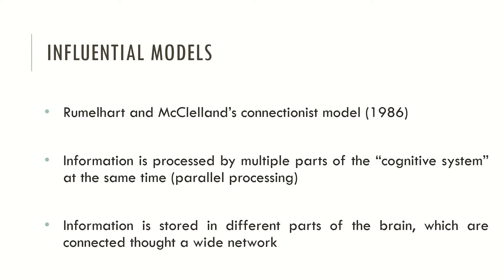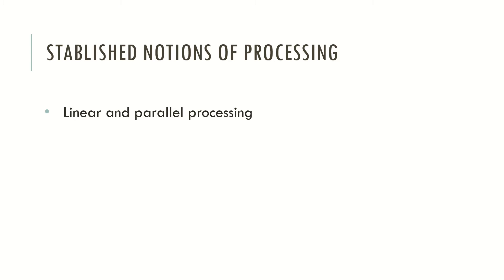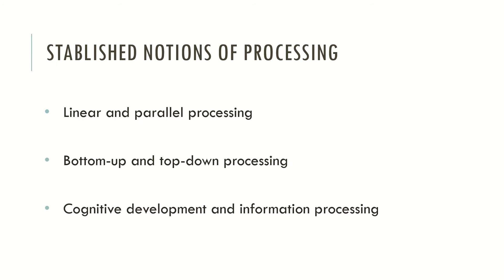Some additional notions are worth retaining. In cognitive psychology, we distinguish between linear and parallel processing, as information may follow a sequence of events or be processed in parallel based on connectionist models. Information processing may also follow a bottom-up or top-down direction, meaning processing can be triggered by environmental stimuli or initiated by inner stimuli. It is also established that information processing and cognitive development are linked — individuals at earlier ages have different types of cognitive processing than those at later ages. We will explore the Piaget model, which addresses exactly this, in a future video.